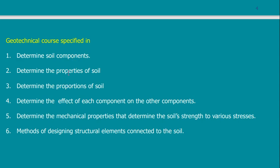We need to determine the properties of the soil — for each type, I need to study the properties of that type. We also need to determine the portions of soil, because if I have, say, three types of soil and mix them in equal quantities, it will give one mixture.